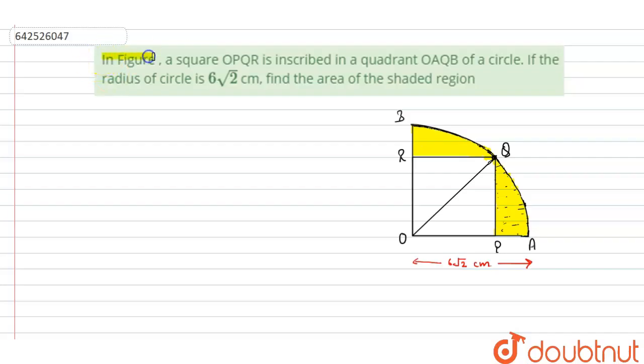The question says that in figure, a square OPQR is inscribed in a quadrant OAQB of a circle. If the radius of the circle is 6√2 centimeters, find the area of the shaded region.